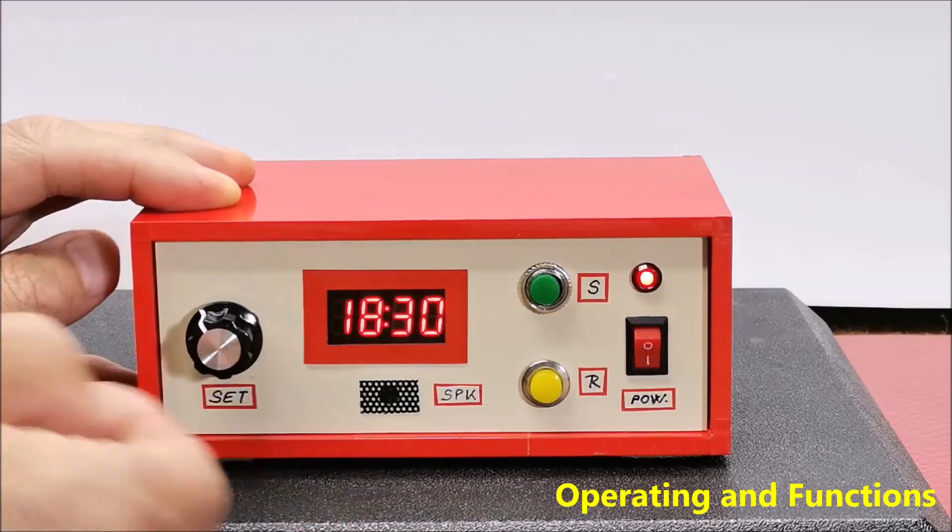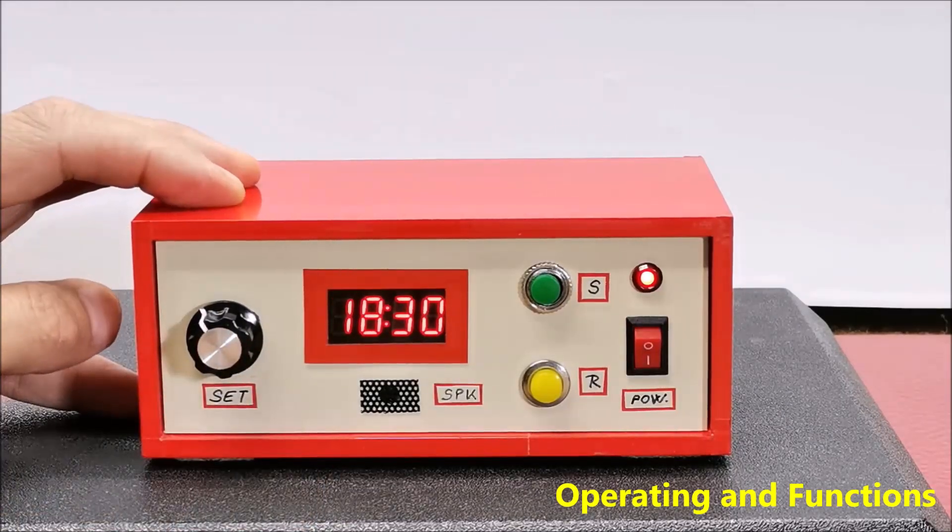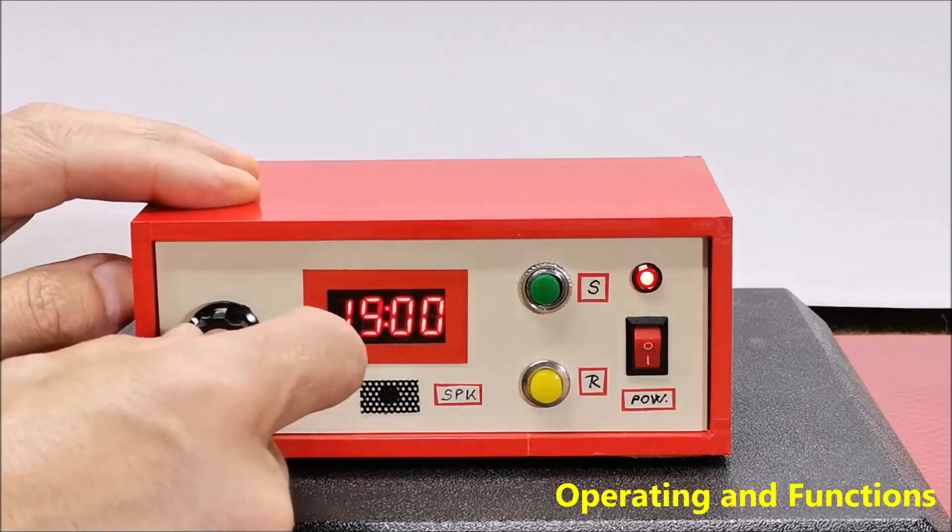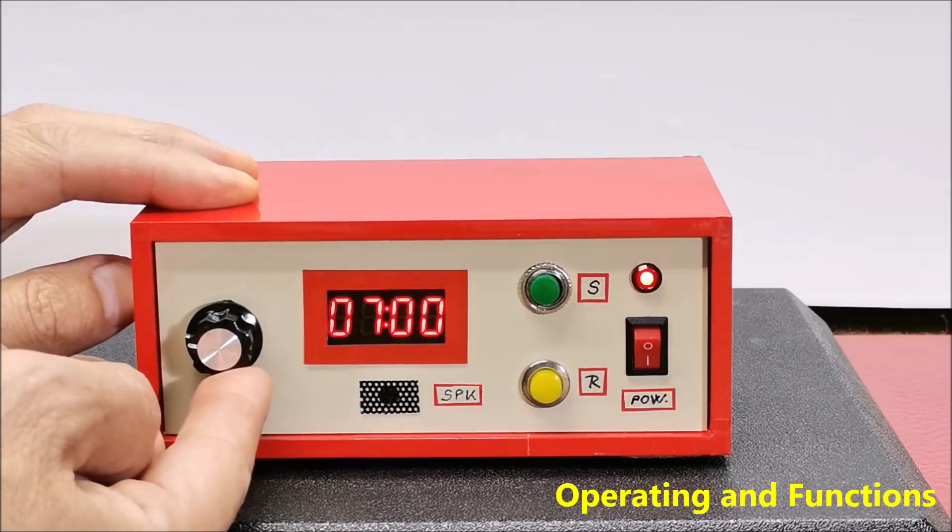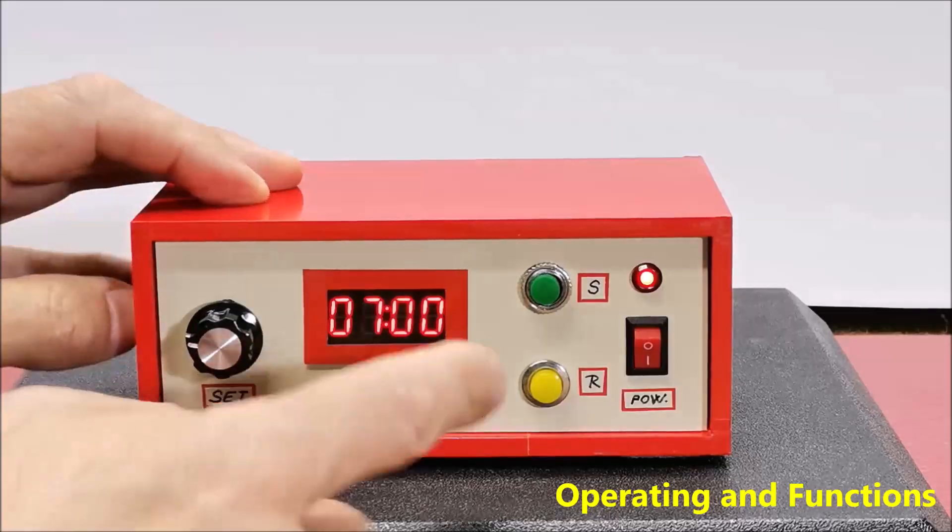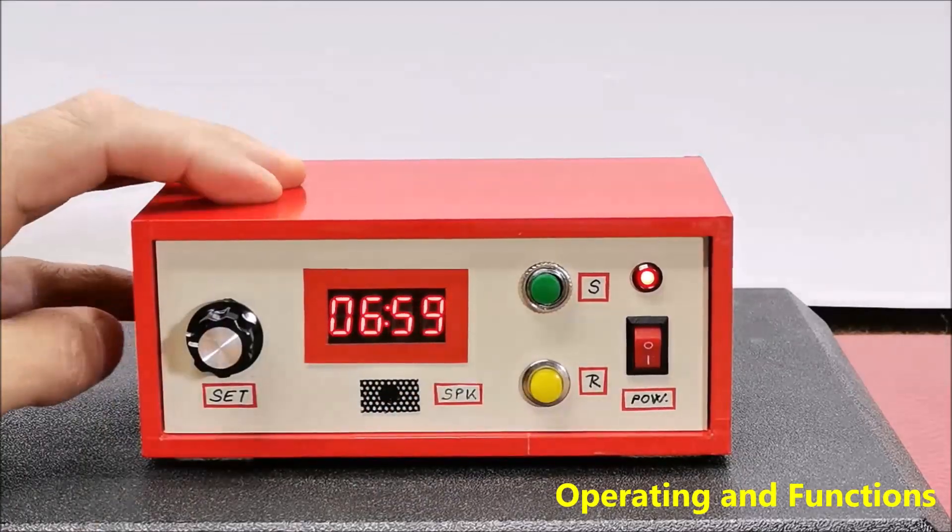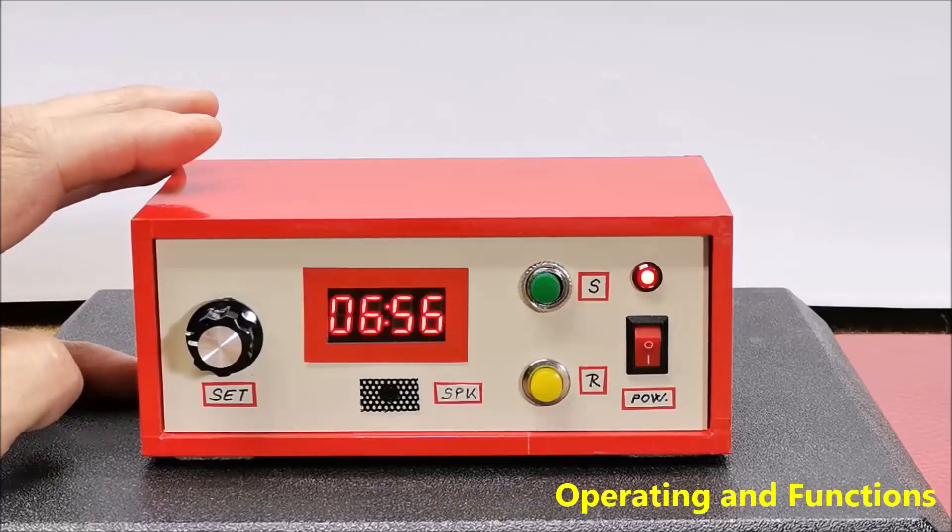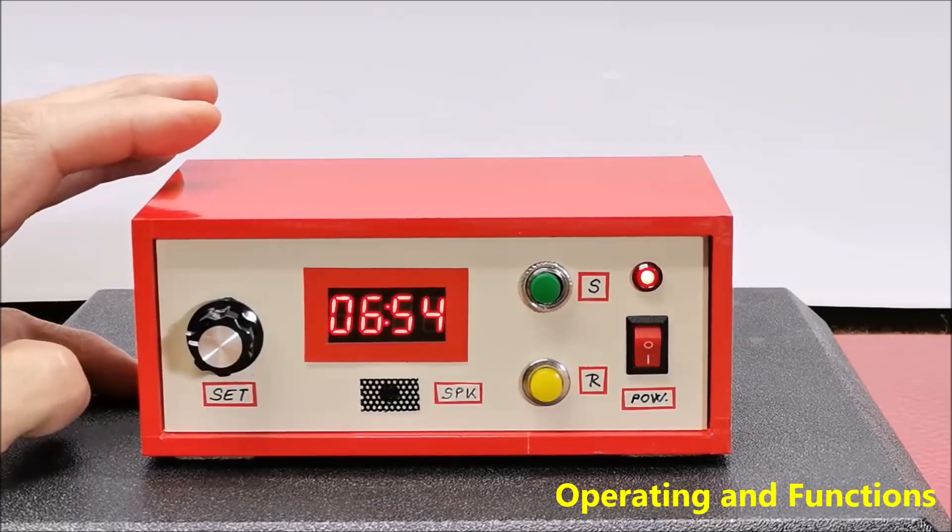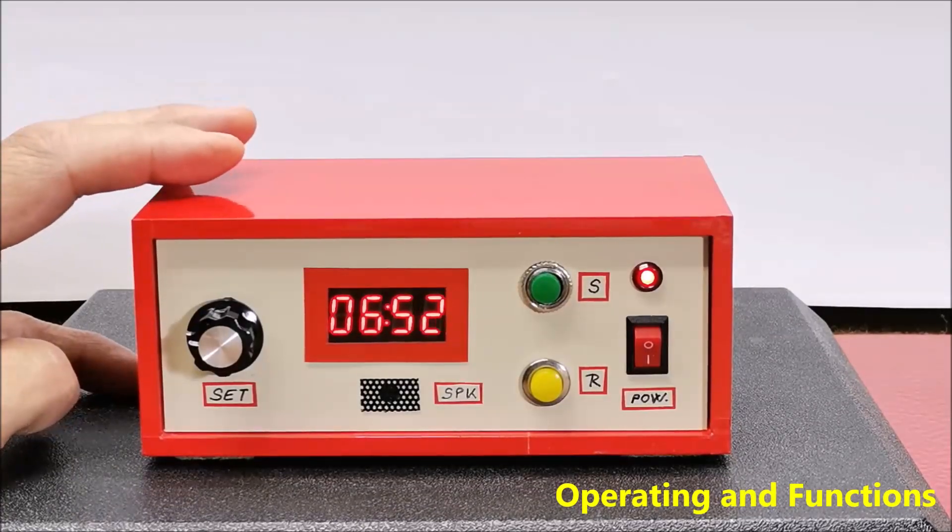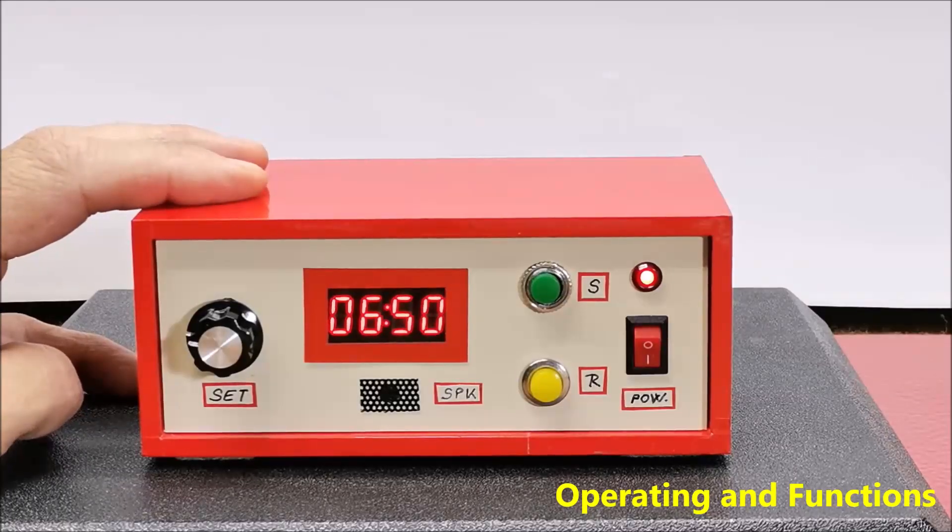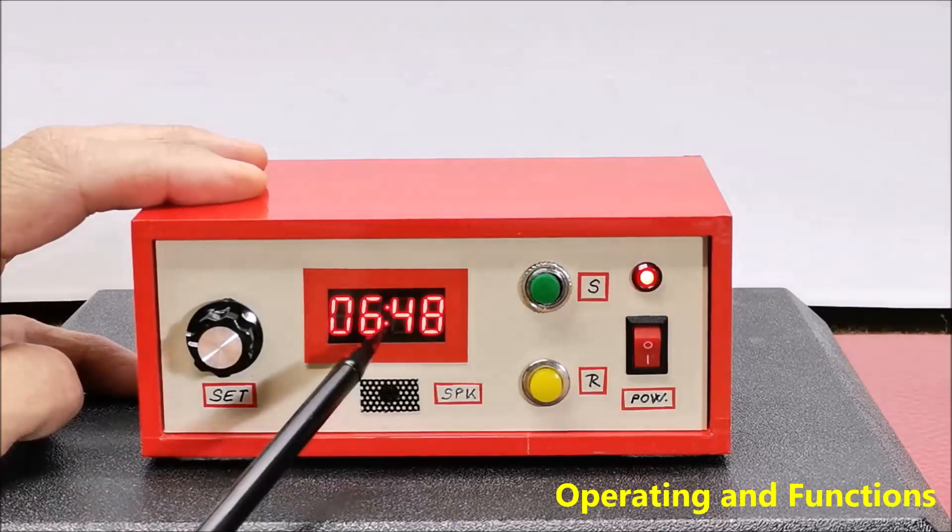Now simply and quickly set the desired time with the potentiometer, for example 7 minutes, and press the start button. The timer starts counting down and the two dots in the middle of the display start flashing.